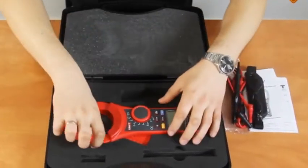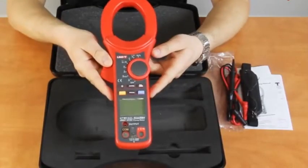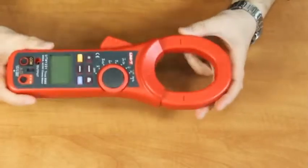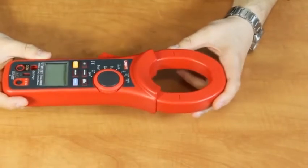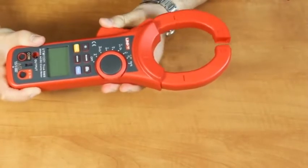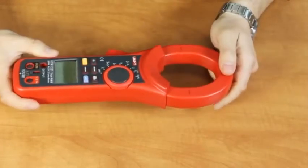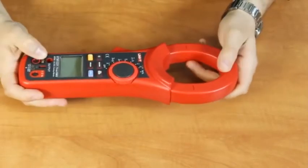The clamp meter is rather heavy and large. However, it is not surprising as the meter measures AC and DC current up to 2000 Ampere. The maximum diameter of the measured conductor is 60 mm. The meter is made of high quality plastic.